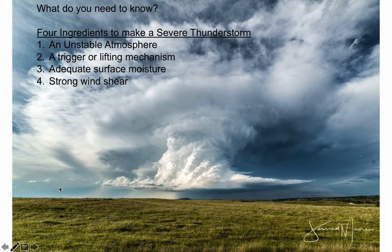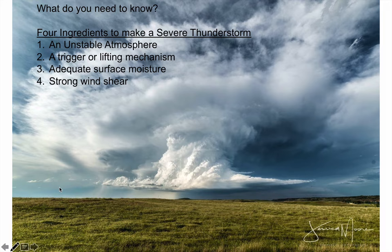Second, we need a trigger mechanism — something to lift the air and get things going, like a cold front, warm front, dry lines, mountains, or sea breezes. Third, you have to have plenty of surface moisture — at least 60-degree dew points is a good threshold to have enough energy to power the whole storm system.